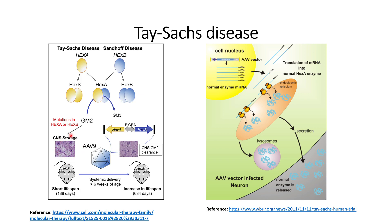Central nervous system storage has been shown in mice not treated with the adeno-associated virus carrying the plasmid of interest. It can be seen that the CNS is not functioning normally and there is continuous accumulation, indicated by dark spots, which could be an indication of GM2 accumulation. Whereas in the case of mice treated with this viral vector containing the plasmid of interest, no GM2 accumulation is shown — meaning GM2 clearance has occurred.